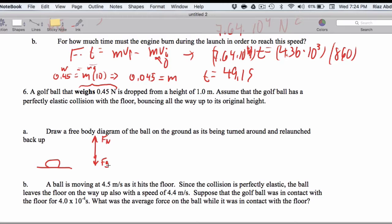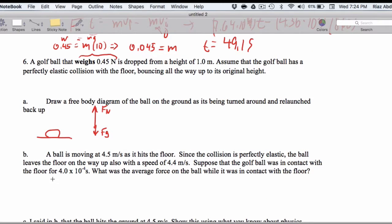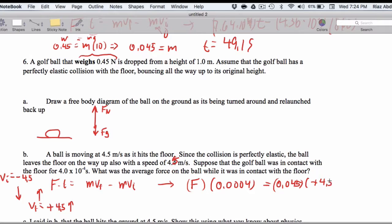So we want to know the average force on the ball while it was in contact with the floor. We're going to use impulse momentum theorem, so let's be clear. FT equals MV final minus MV initial. I'm sorry, these should both be 4.5. So let's go ahead and do that. So the initial speed is negative 4.5 because it's down, and the final is plus 4.5 up. So we have F times 0.0004 seconds, equals the mass 0.045 times V final, which is plus 4.5 minus 0.045 times negative 4.5.